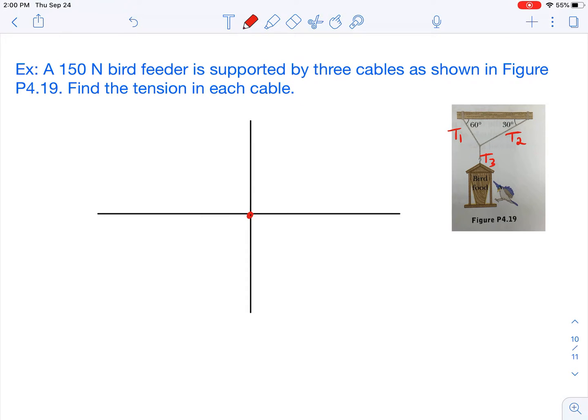And so we basically have one downward force is T3. And based on the problem, we know that that is a 150 Newton bird feeder. So I know that T3 equals 150 Newtons. And we're technically negative because it's going in the downward direction.